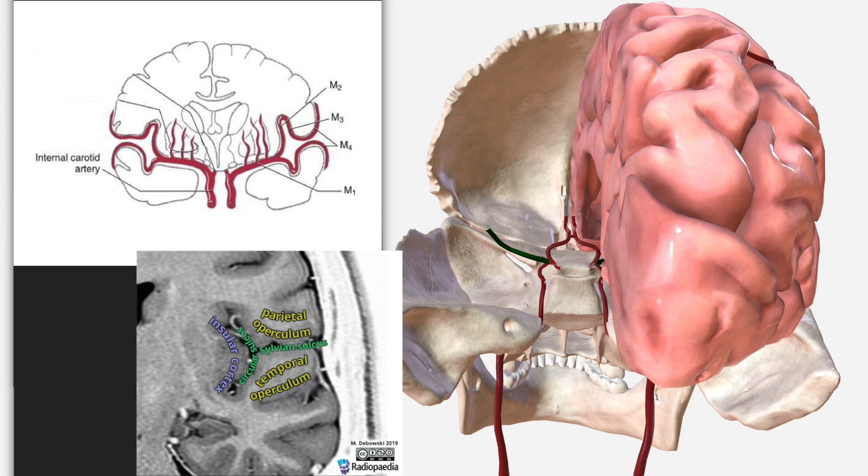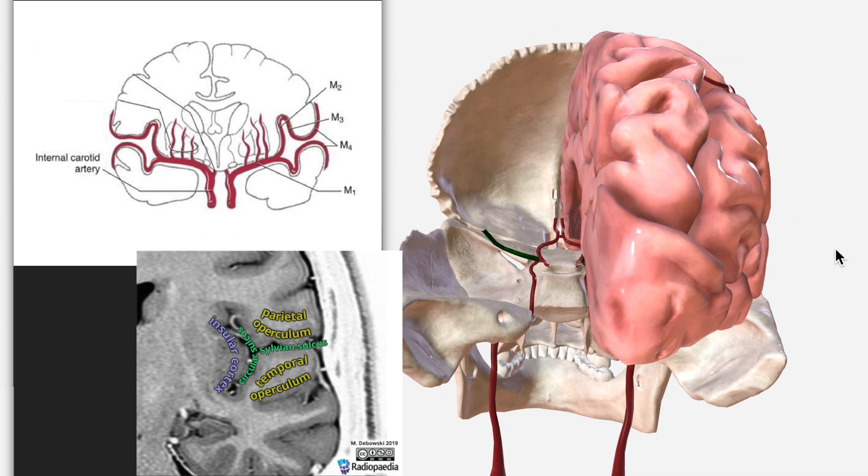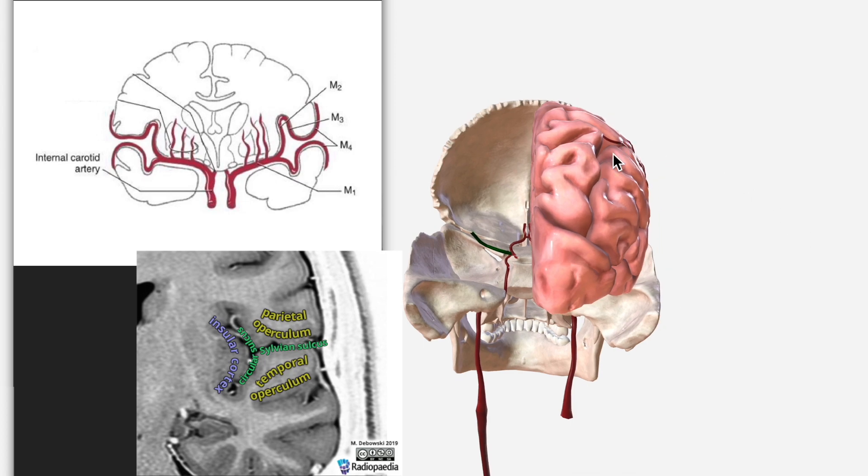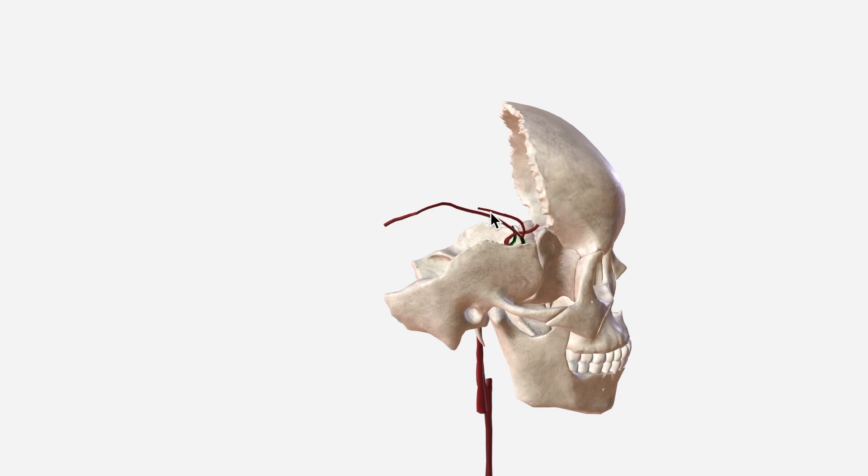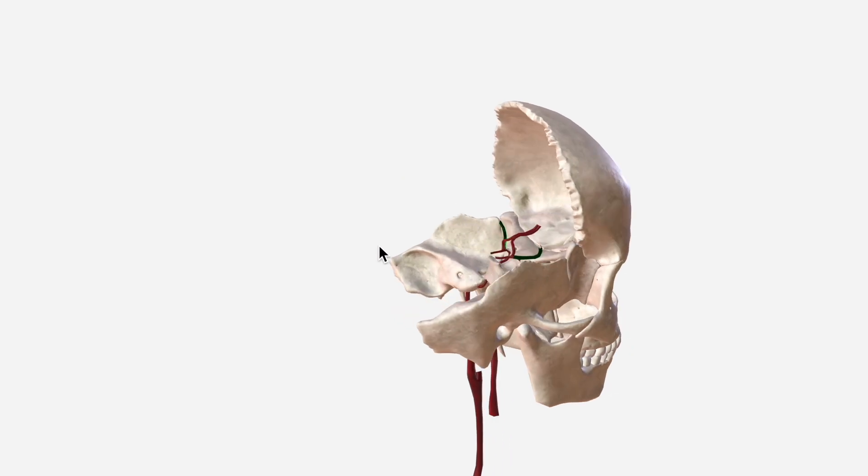The M3 segment is the part of the MCA which travels over the parietal and the temporal operculum. Then the M4 segments extend across the external surface of the cerebral cortex. This branch which we looked at earlier is one of the M4 segments. Let's remove the cerebral cortex and take things back to the beginning.